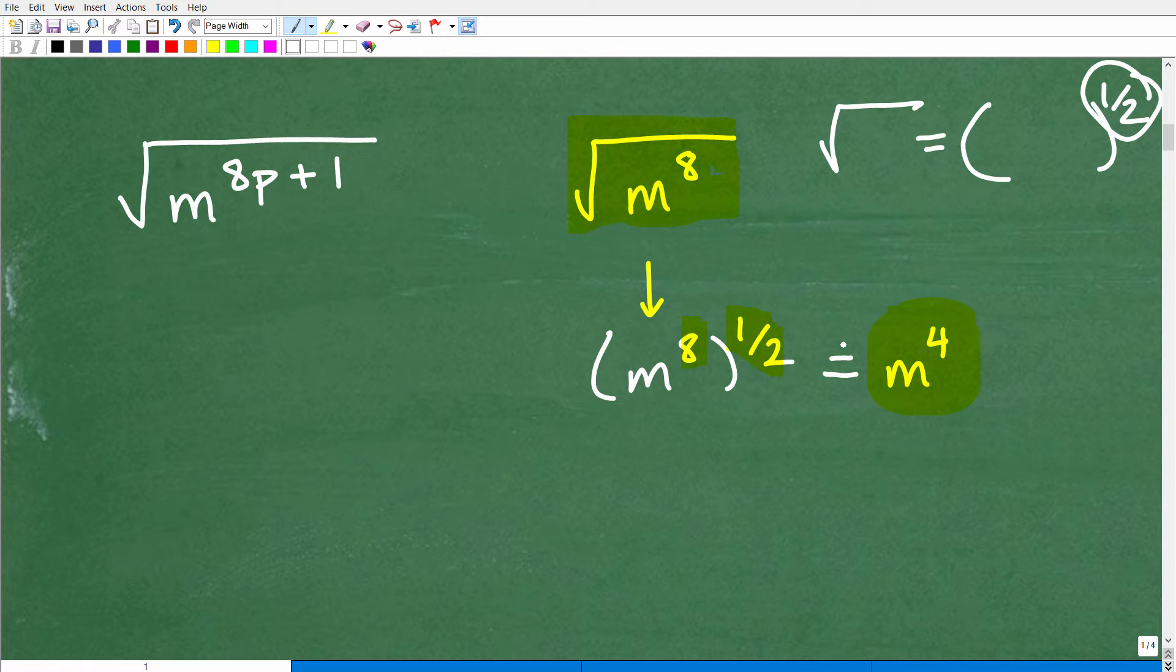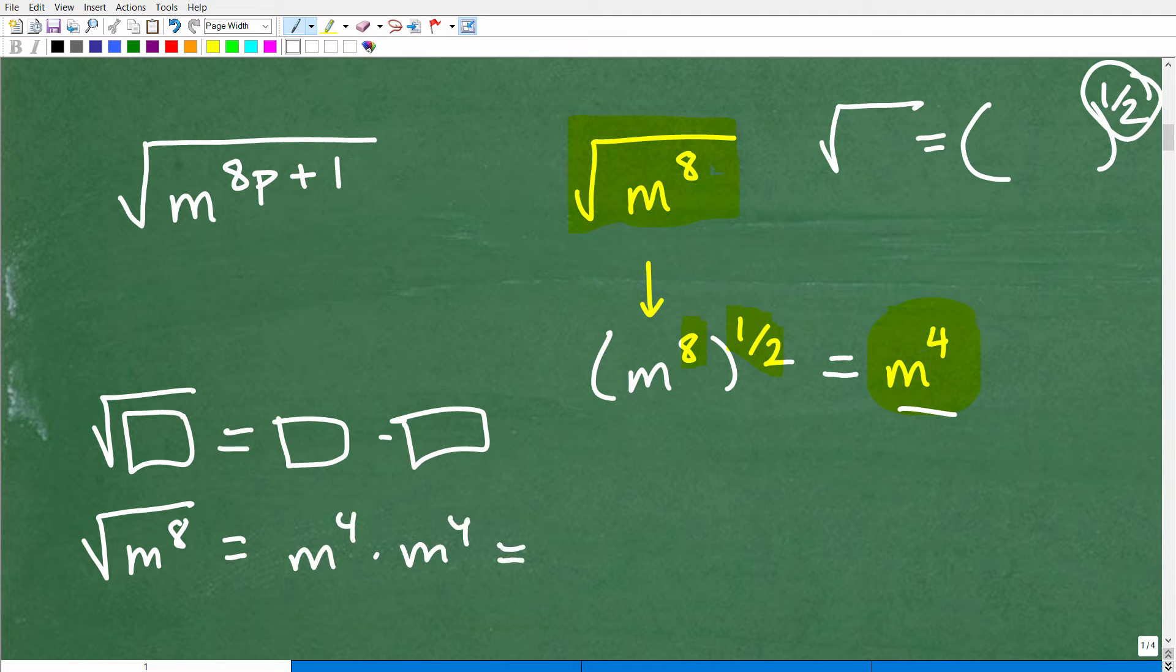So instead of the square root of m to the 8th, we can write m to the 8th to the 1 half power. So what we're going to do here is we're going to distribute this 1 half and multiply it. 1 half times 8 is 4. So the square root of m to the 8th is m to the 4th power. And that makes sense because remember,